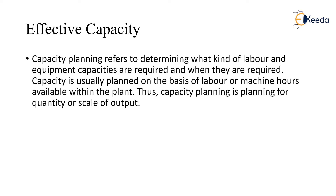Before going into that, we first learn about capacity planning, which refers to determining what kind of labor and equipment capacities are required and when they are required. Capacity is usually planned on the basis of labor or machine hours available within the plan. Thus, capacity planning is planning for quantity or scale of output.